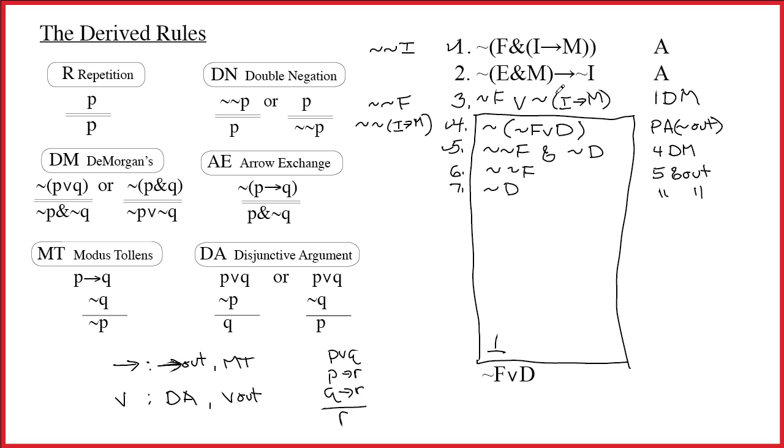Back up to 2. Arrow's the main connective. For arrow out, we would need to have tilde e and m. Don't have it. For modus tollens, we said we would need tilde tilde i. Don't have that either. Look at line 3. Wedge is the main connective. For dA, we said we would need to have tilde tilde f. Ah! We're in luck. Tilde tilde f has shown up.